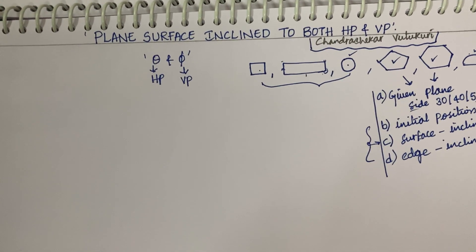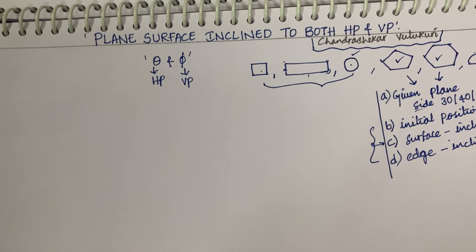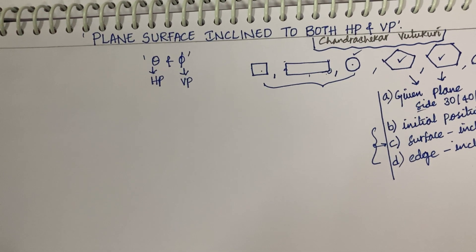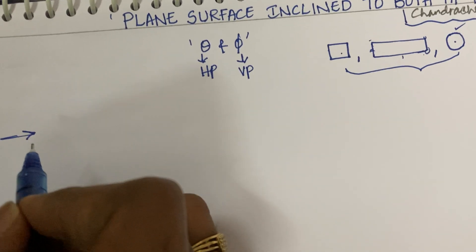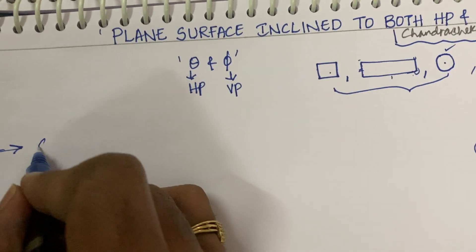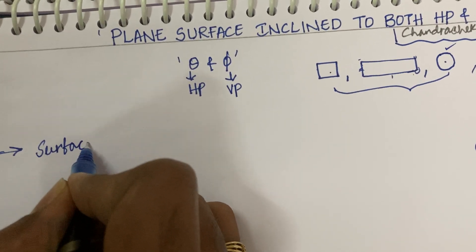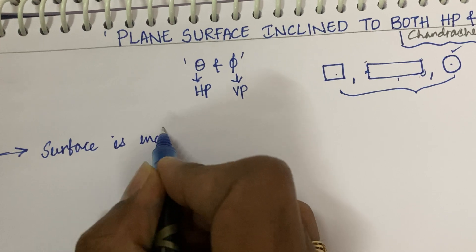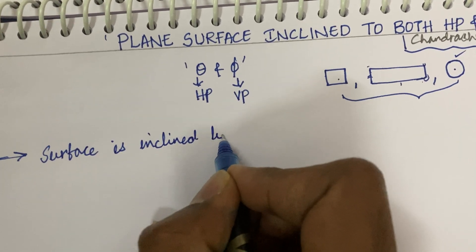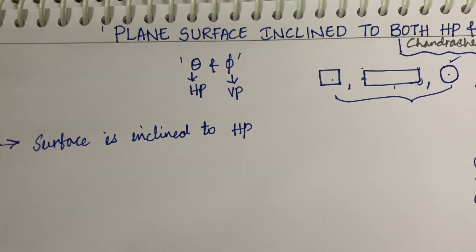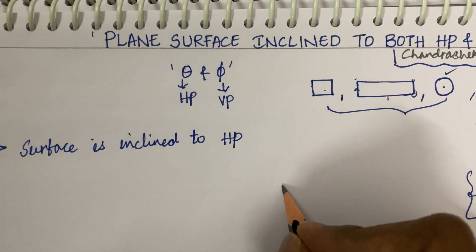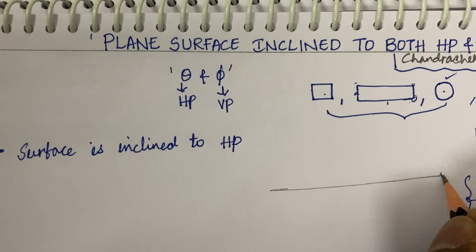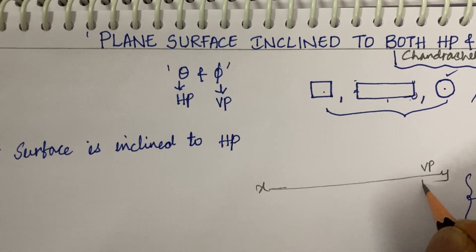For example: a pentagonal plane is inclined making an angle of 30 degrees to HP and 45 degrees to VP with its edge. Now let us look at the conditions of the pentagon — how they are going to ask a pentagonal or hexagonal problem. If the surface is inclined to HP, you are supposed to first work out the reference line, which is the XY line. This is the vertical plane and this is the horizontal plane.